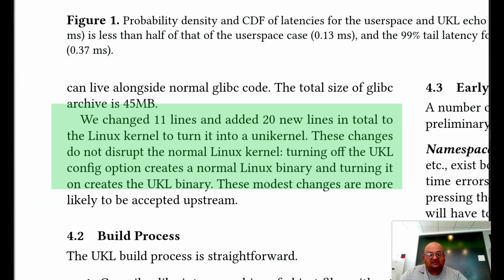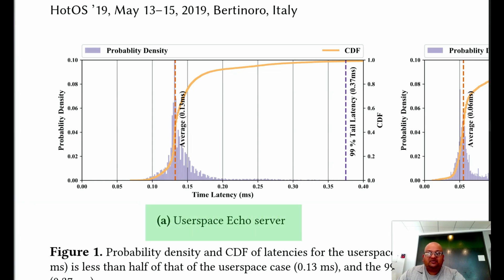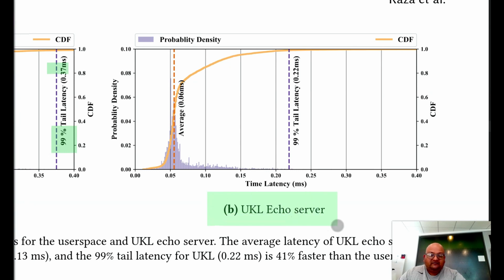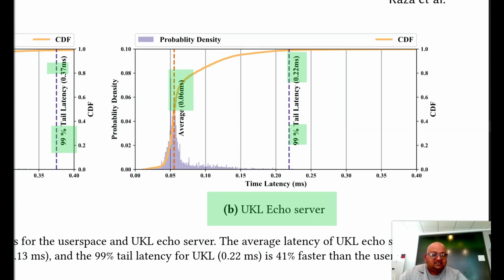They also performed a simple benchmark with an echo server. In user space, the average latency was about 0.13 milliseconds with the 99th percentile latency being 0.37 milliseconds. Compare that to the unikernel version, where the average latency dropped to 0.06 milliseconds with the 99th percentile latency being 0.22 milliseconds. That boils down to the average being twice as fast, and the tail latency at the 99th percentile being about 40% faster.